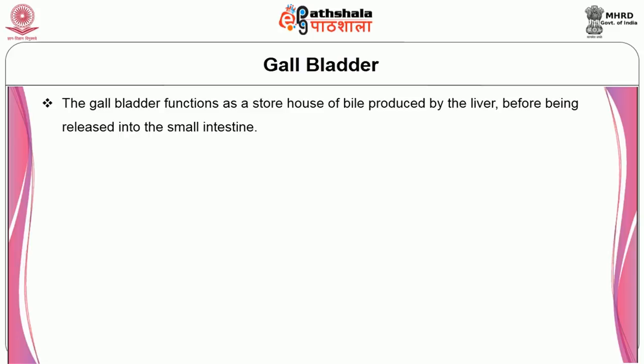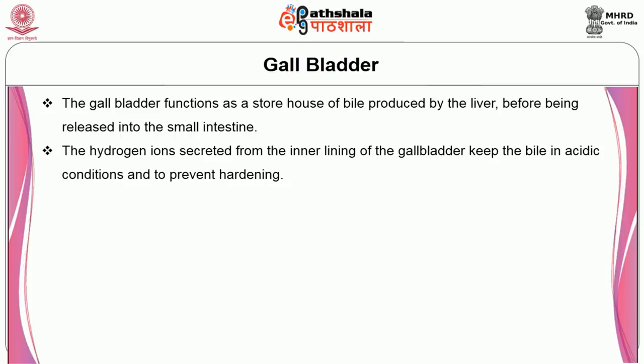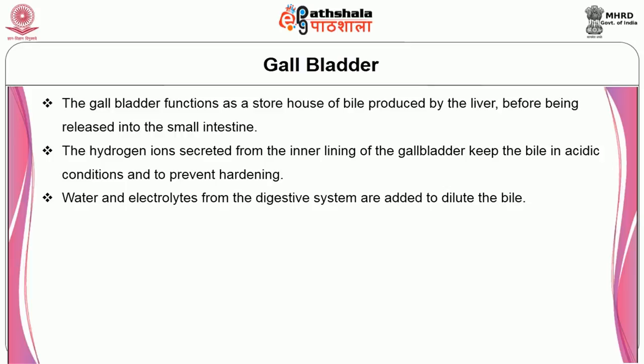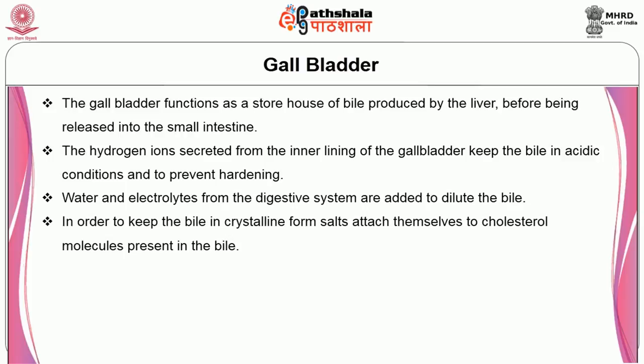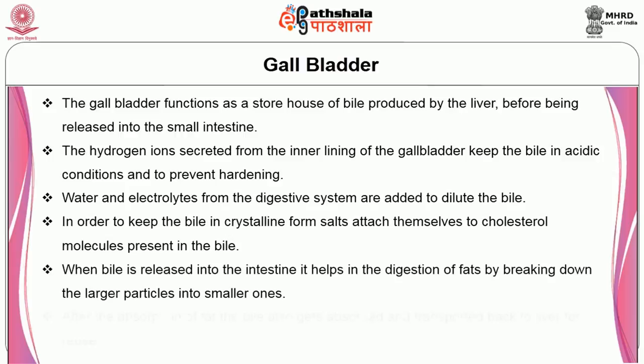The hydrogen ions secreted from the inner lining of the gallbladder keep the bile in an acidic condition and prevent hardening. Water and electrolytes from the digestive system are added to dilute the bile. In order to keep the bile in crystalline form, salts attach themselves to cholesterol molecules present in the bile. When bile is released into the intestine, it helps with the digestion of fats by breaking down larger particles into smaller ones. After the absorption of fat, bile is also absorbed and transported back to the liver for reuse.